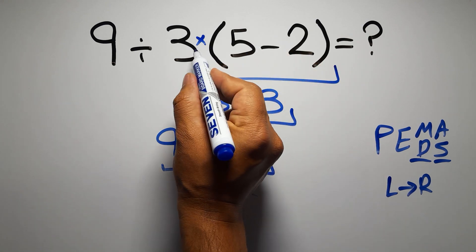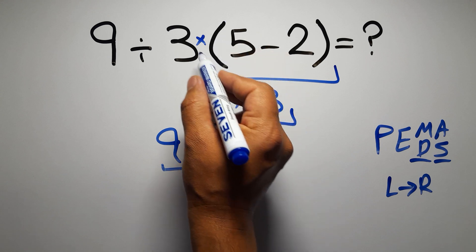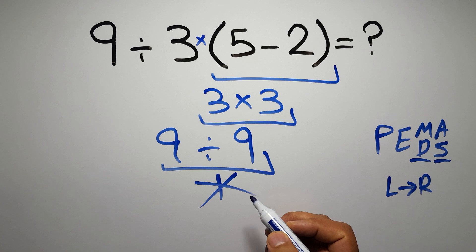Here we have a multiplication, because in mathematics when a number is placed next to parentheses, it means multiplication, and we usually don't write the multiplication sign for brevity.